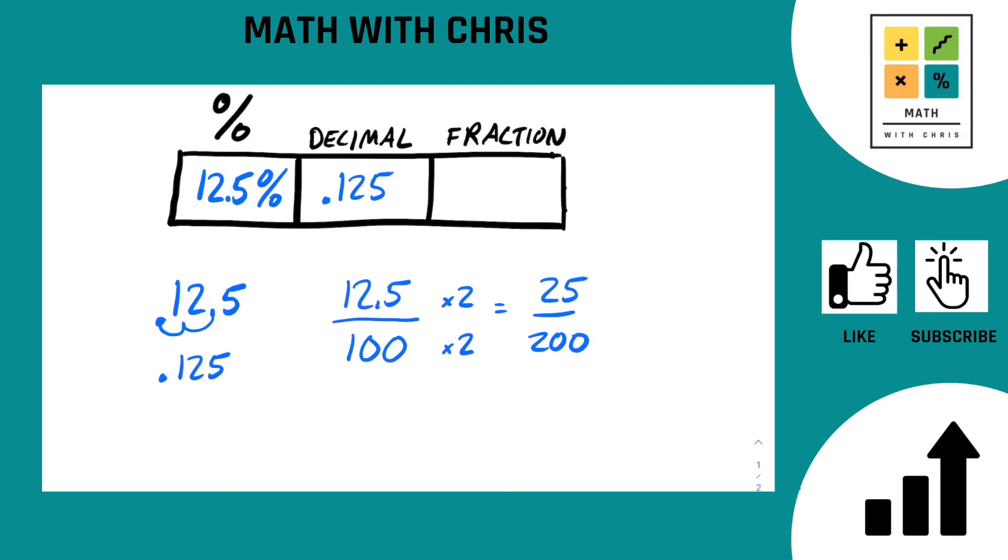25 and 200. Well, 25 goes into both of those. Divided by 25, divided by 25 equals, get some more space down here. 25 divided by 25 is 1. And 200 divided by 25 is 8. So that is our finished fraction, 1 eighth.